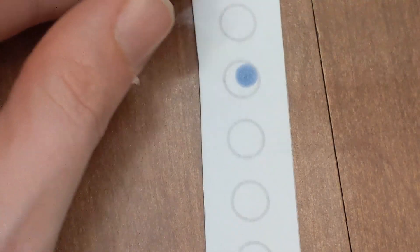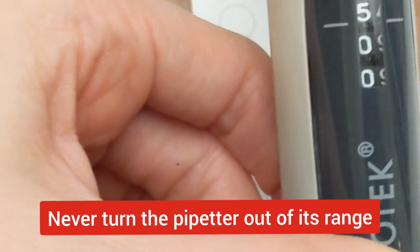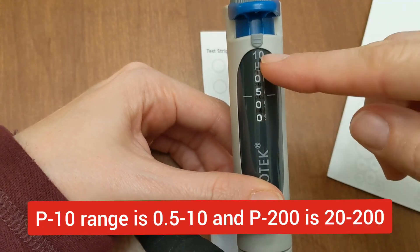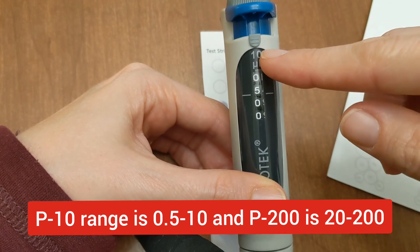Remember the cardinal rules of pipetting are never ever turn the pipetter out of its range. The P10 goes from 0.5 to 10. It's set to 5 right now. Never go below 0.5, never go above 10.